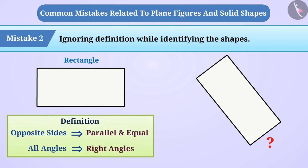According to their understanding, such a shape is a rectangle. The definition of rectangle tells us that a shape whose opposite sides are parallel and equal and all angles are right angles is a rectangle. By definition, we can say that it is a rectangle.